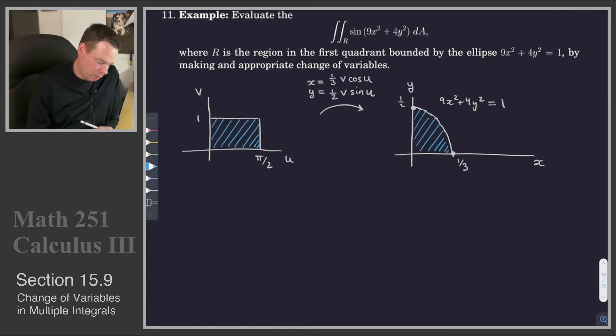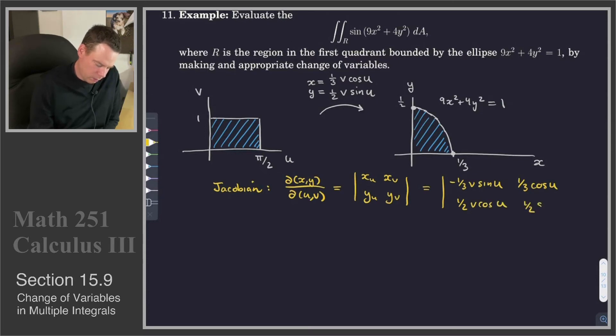Now what we need to work out is the Jacobian. That's ∂(x,y)/∂(u,v), or in other words, x_u, x_v, y_u, y_v. x_u, that would be -1/3 v sin u. x_v is 1/3 cos u. y_u is 1/2 v cos u, and y_v is 1/2 sin u.